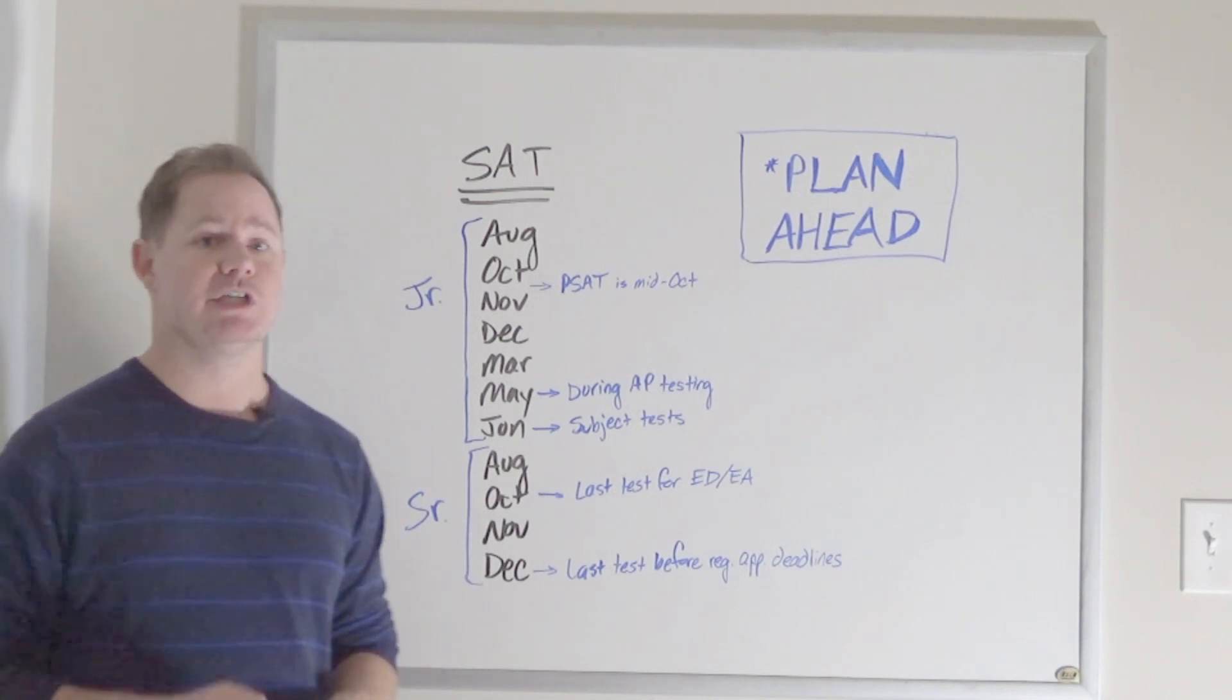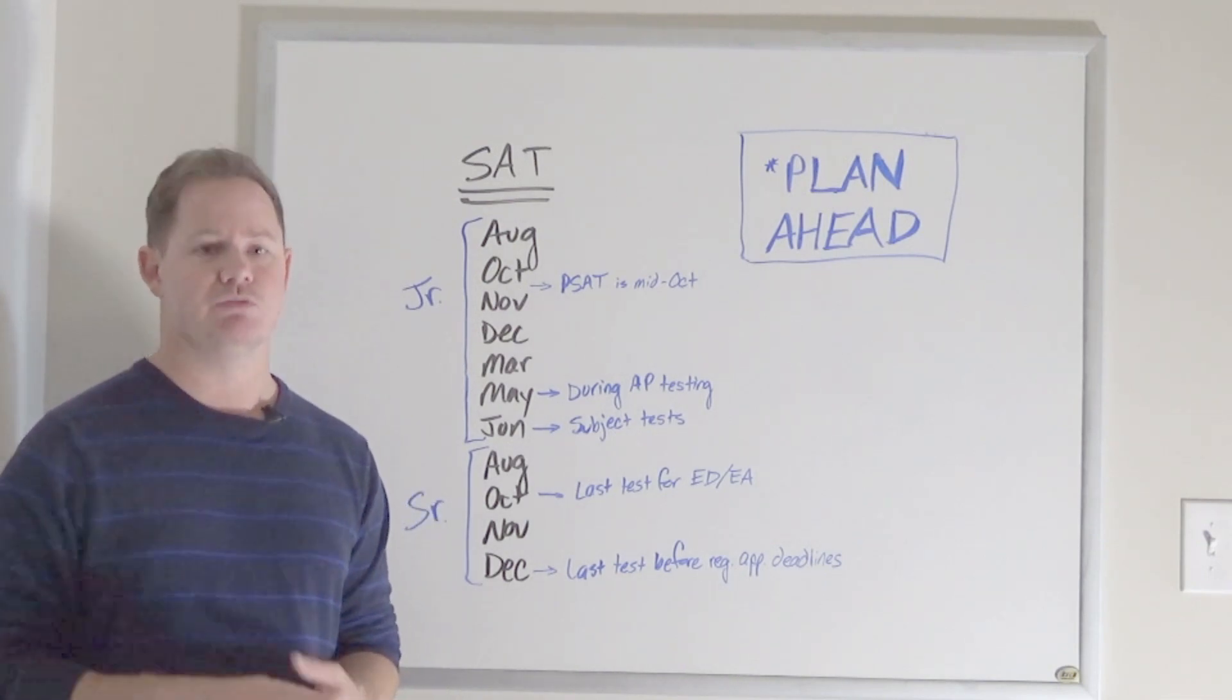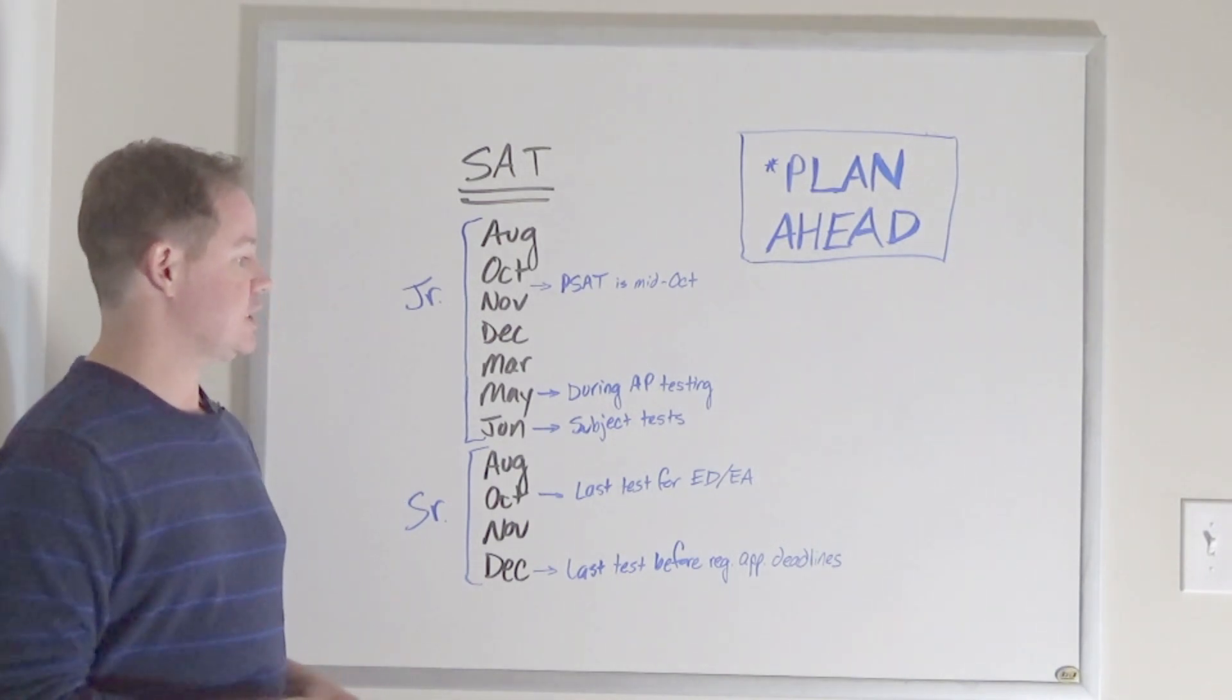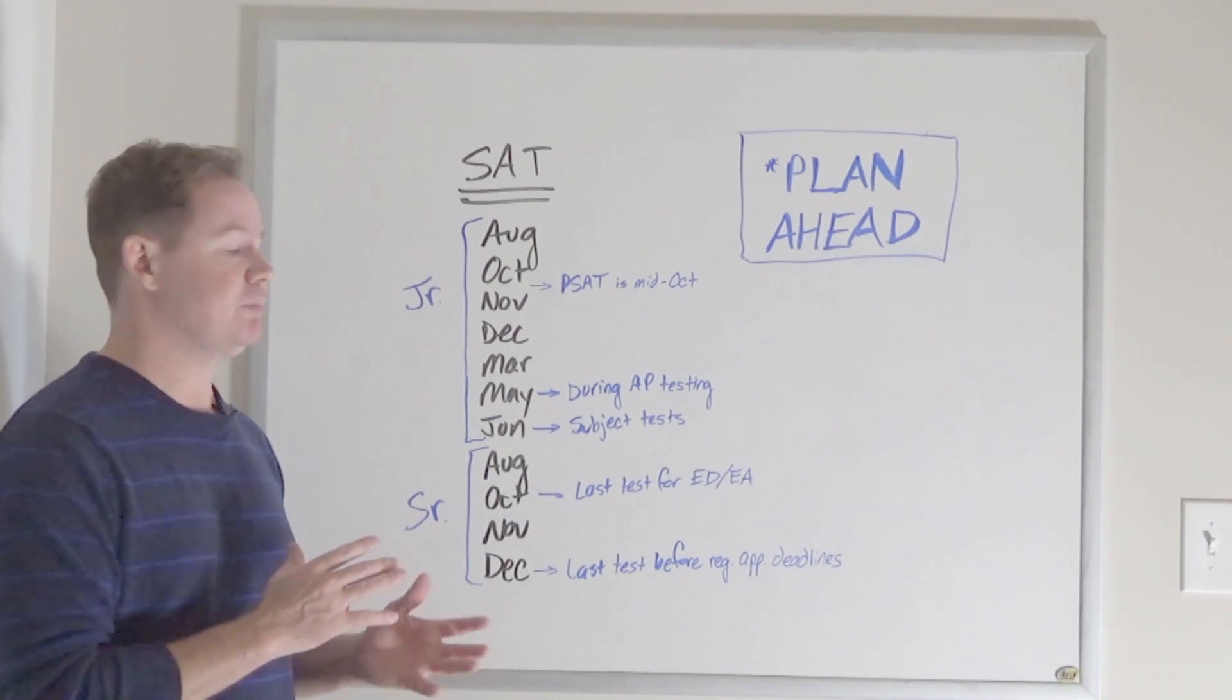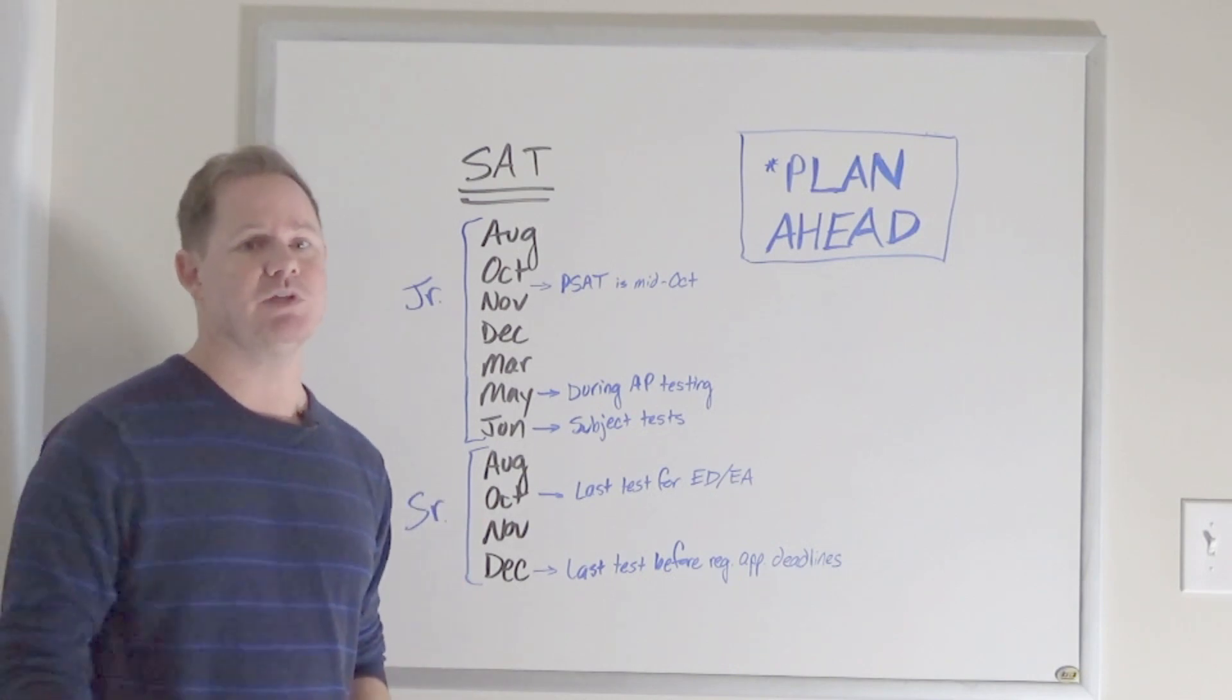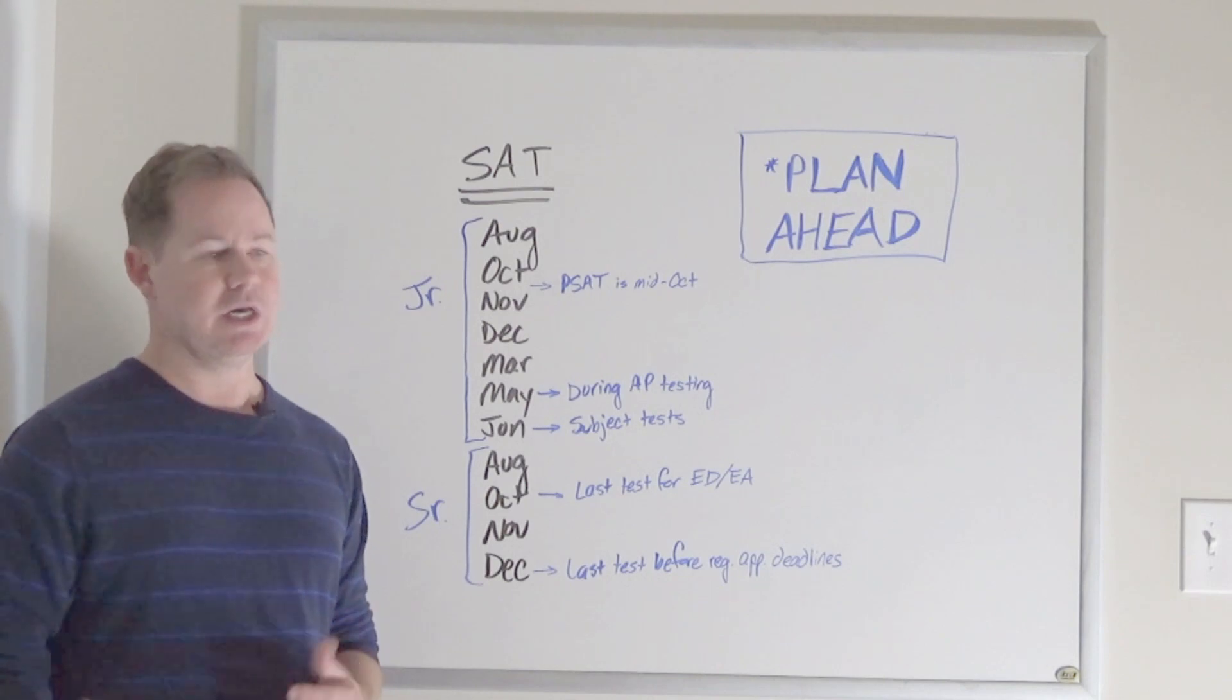So senior year tests are great for that. Just keep in mind application deadlines - you want to look at early decision, early action deadlines as well as regular application deadlines. So for most schools the early decision, early action deadline is going to be November 1st, and sometimes earlier actually. It moves up a little bit seemingly every year, but most often it's going to be November 1st, which means the October SAT is the last one you can take and still get scores in in time for that early decision or early action deadline at a lot of schools.